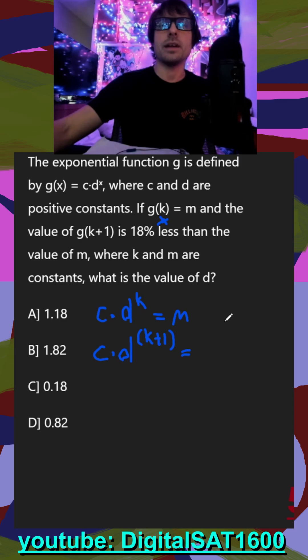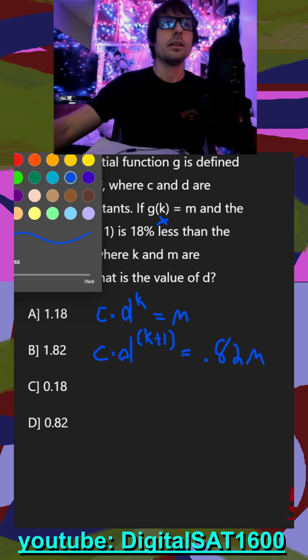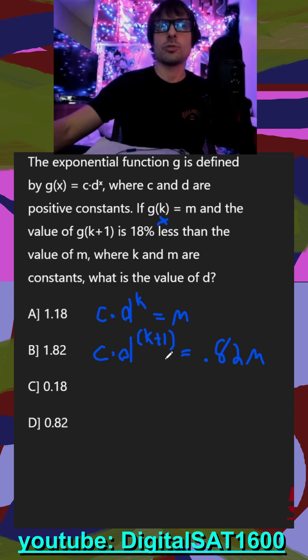And then this is going to be equal to 18% less than m. Remember, if I subtract 18%, I'll have 82% left. So we can do a little bit of algebra rules here. When it's d to the k plus one, all they're saying is that's d raised to the k times d raised to the one, because when I multiply bases, I add exponents. And this is going to be equal to 0.82m.